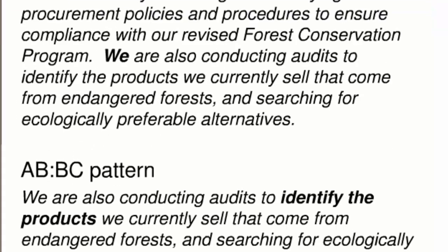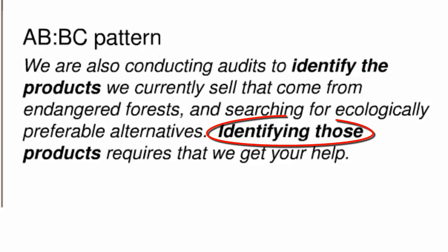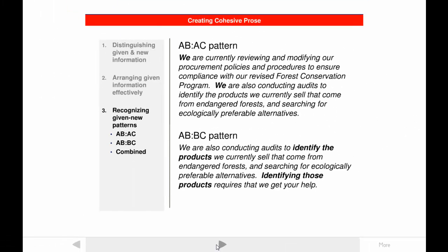The second cohesive pattern creates a link by repeating the new information from the previous sentence as the given information in the following sentence. In the example from the letter to suppliers, 'identify products' appears as new information in the predicate slot of the first sentence, and then it appears in the subject slot of the second, where it's given information. This pattern is called A-B-B-C, where the repetition of B creates the link. These two patterns can also be combined within a single paragraph.